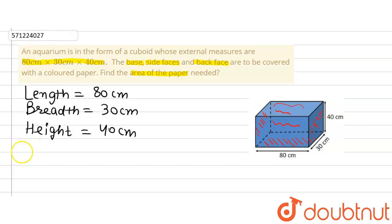So area of the paper required will be equal to area of the base. Area of the base is a rectangle with length 80 and breadth 30.